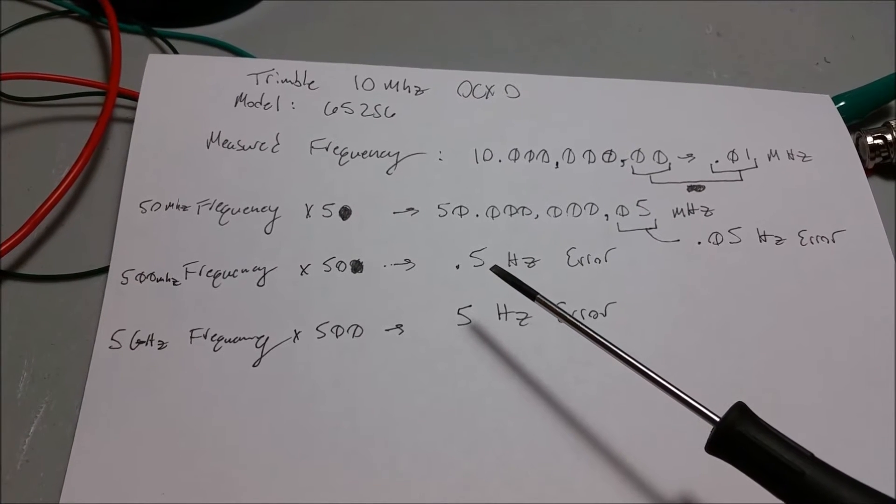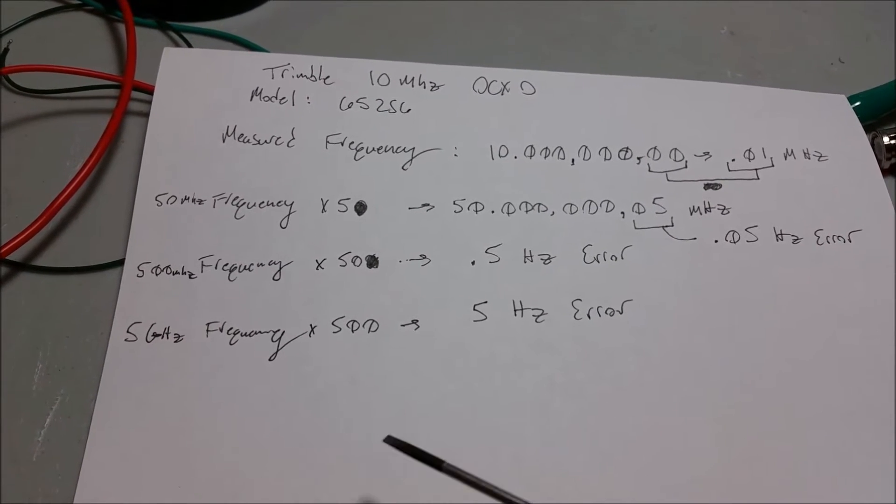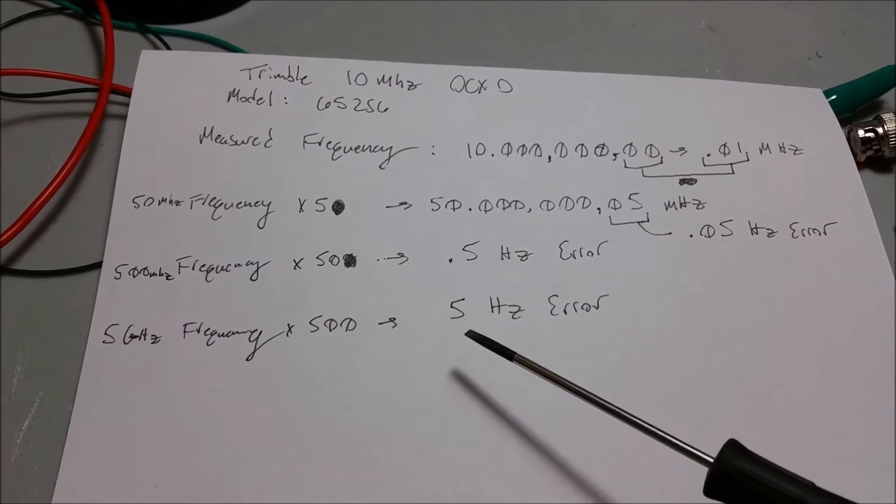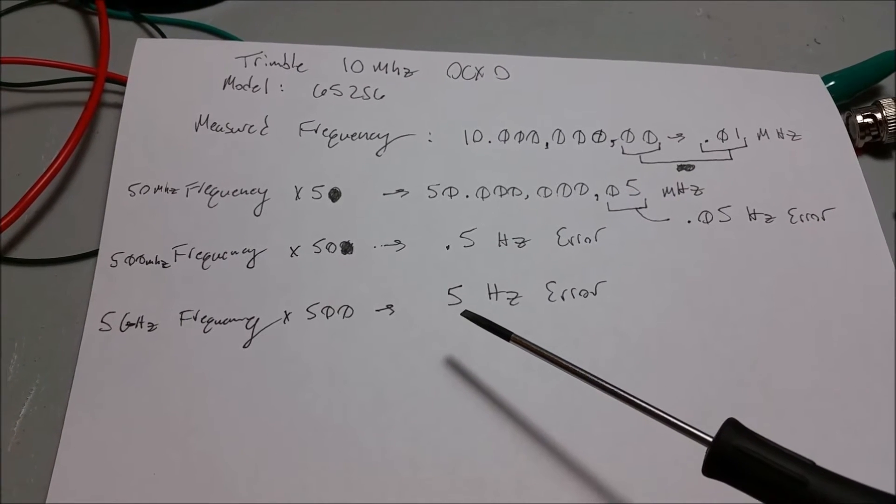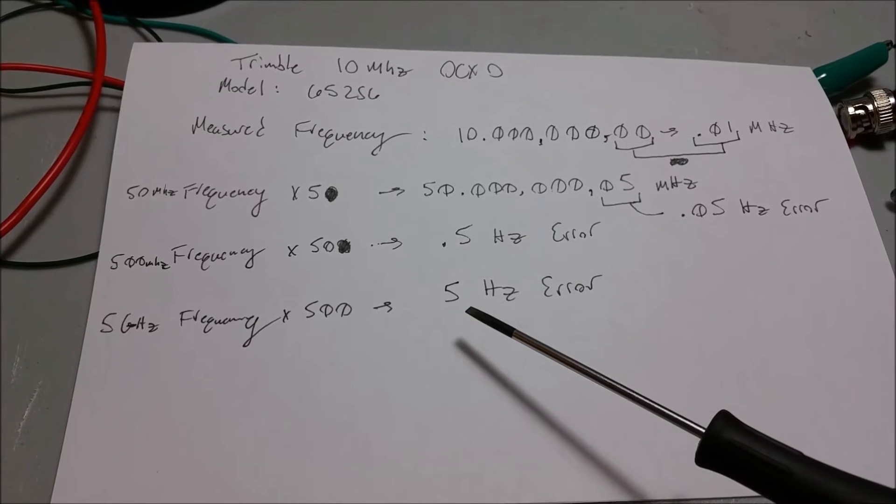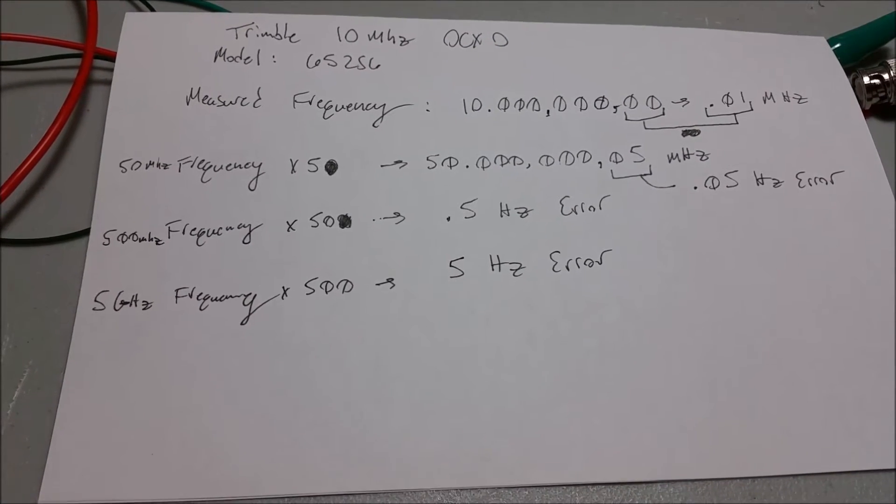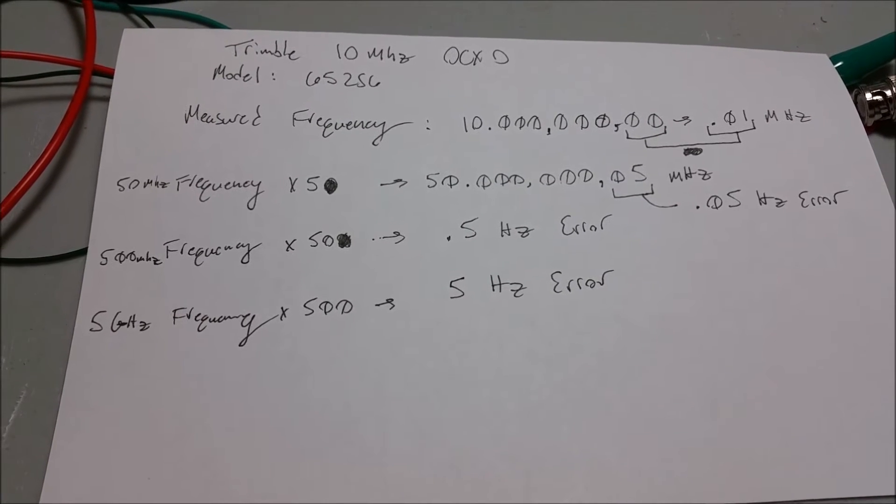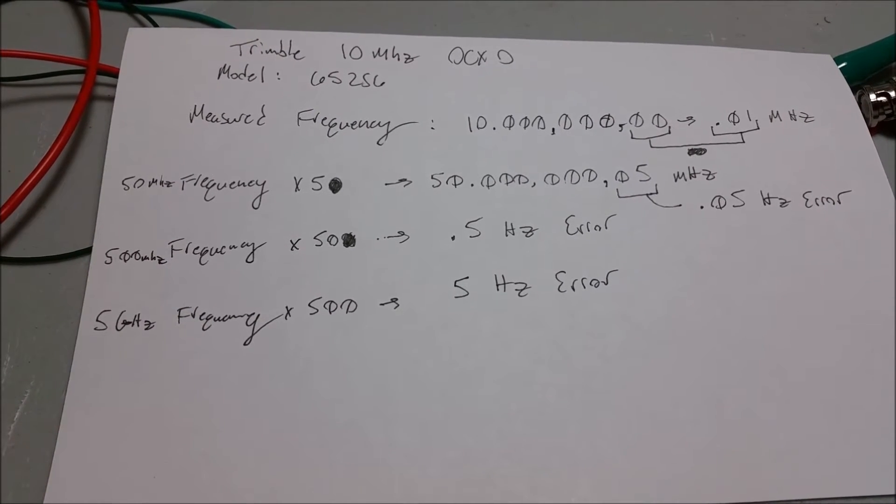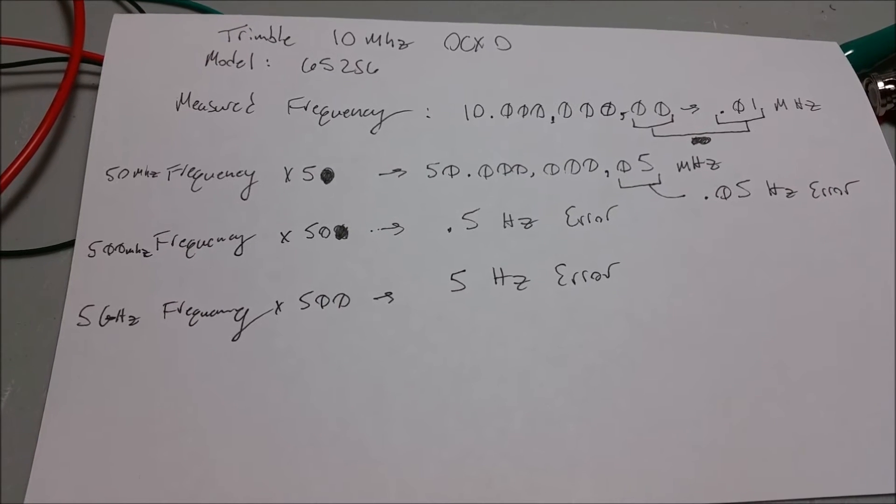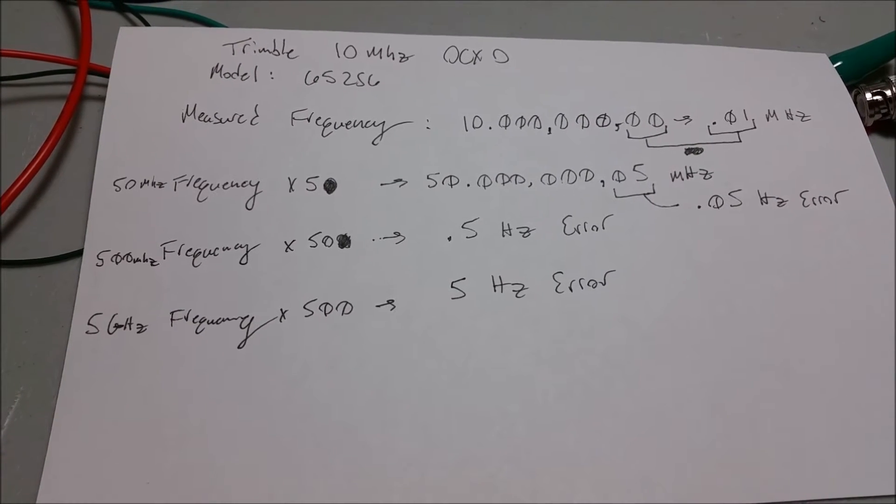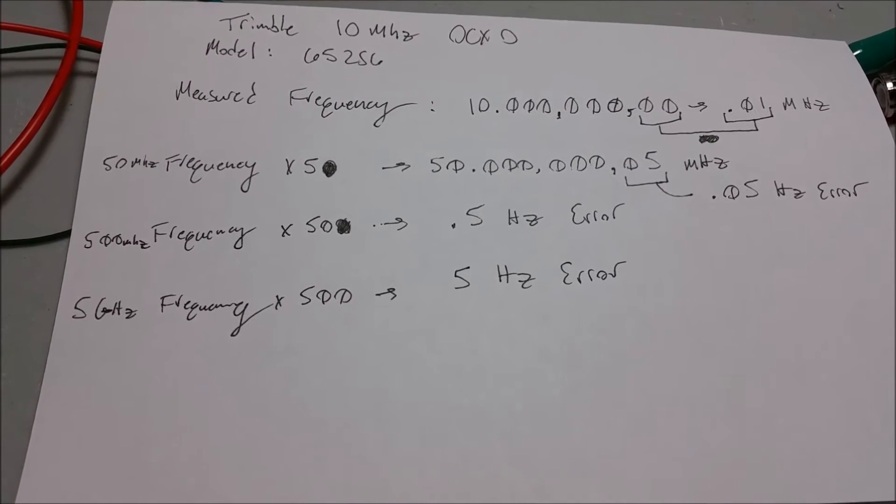And then we times that by 500, we get 5 gigahertz, and that's now 5 hertz error which then it's going to be noticeable. But I don't think we're going up to 5 gigahertz with this. So I would say the highest possible usage for this would be up in the 900 megahertz range, and it's going to be slightly less than 1 hertz of error, 1 hertz.